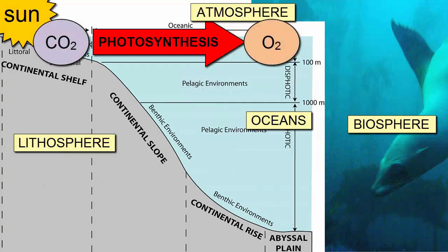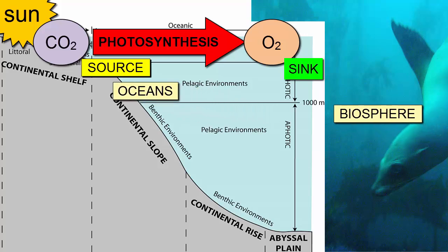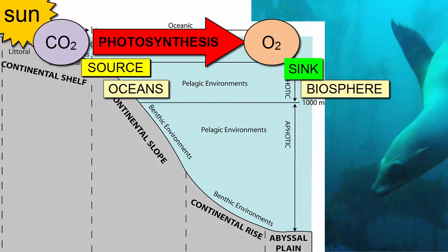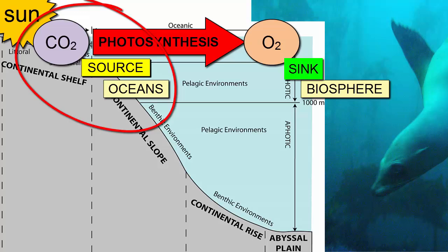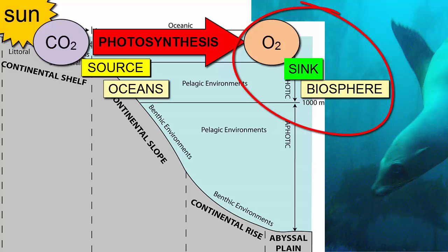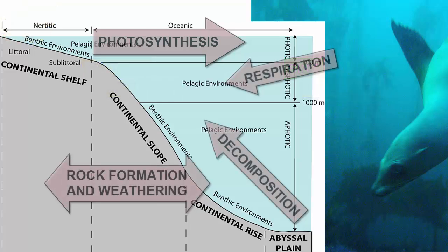When carbon dioxide or oxygen is removed from a reservoir, we describe the location from which it has come, or the process that has transported it, as a source, and the location to which it goes as a sink. For example, photosynthesis removes carbon dioxide from the oceans and puts it into autotroph or heterotroph sugars — basically the living body. The reservoir it left, the source, is the oceans. The reservoir it travels to is the sink, in this case the marine organism itself, or the biosphere.